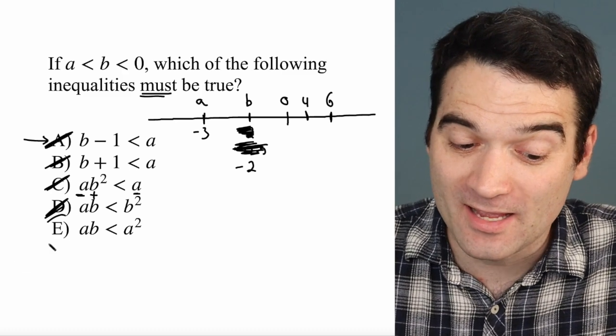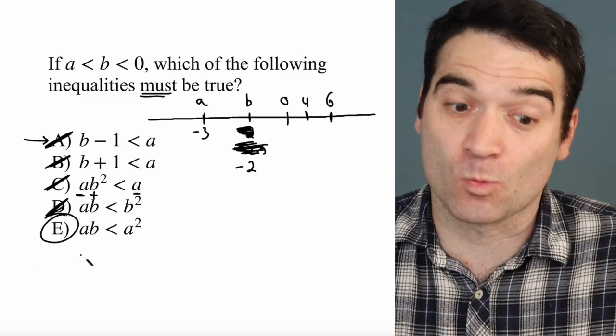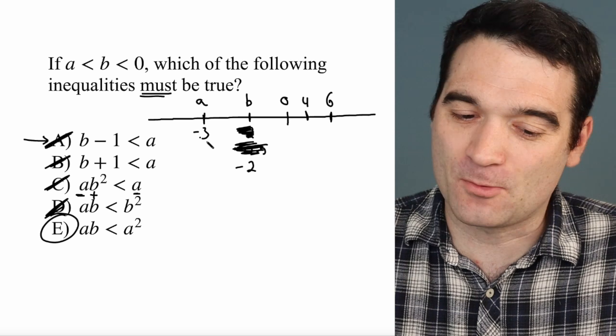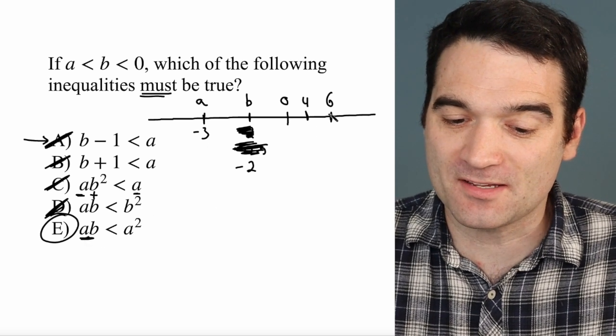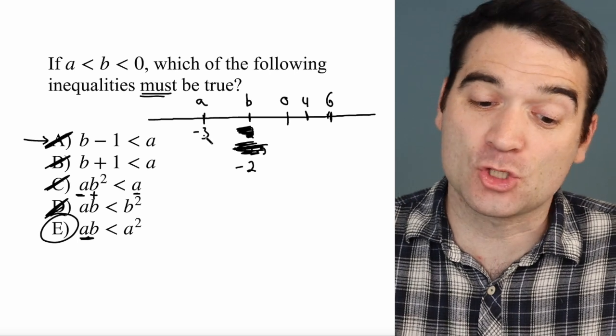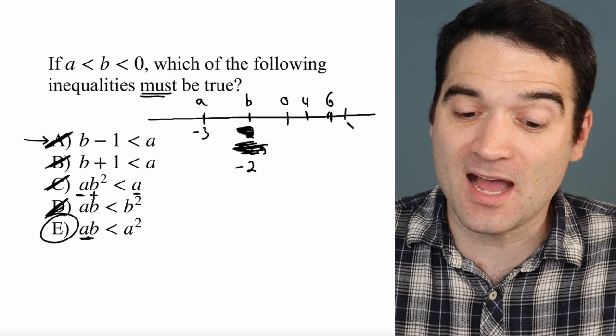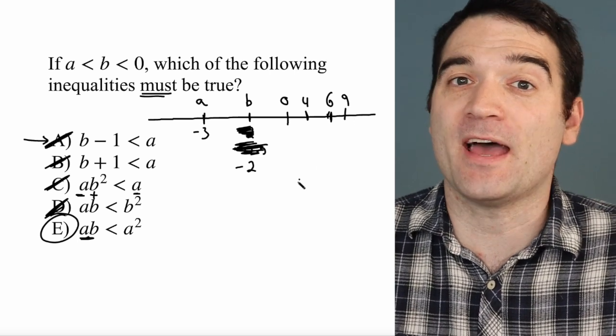And by process of elimination, it has to be E. But here's why. Let's stick with these same numbers here. A times B is positive 6. Negative 3 squared is positive 9. So that's an example of that being true.